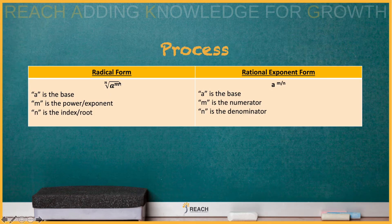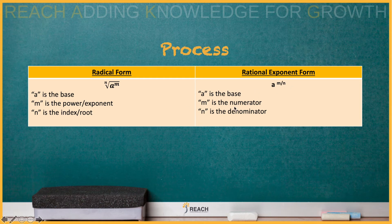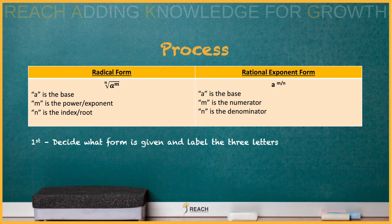Look to your left — you see the radical form — and to your right, you see the rational exponent form. Let's look at our base: both forms have base a. In the radical, m is the power and n is the index or root. On the right side, m is the numerator and n is the denominator. Recall that m over n is a fraction.